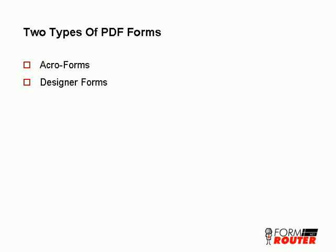There are two types of PDF forms. One is called an Acroform and the other is called a Designer form. An Acroform is a form that's built in Adobe Acrobat Professional. A Designer form is built in a tool called Adobe Designer. This presentation will focus on Acroforms created using Adobe Acrobat Professional.